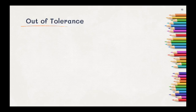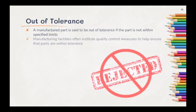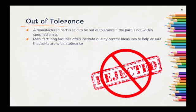So what happens when an object is out of tolerance? A manufactured part is said to be out of tolerance if the part is not within the specified limits. Manufacturing facilities often institute quality control measures to help ensure that parts are within tolerance. This means that if a part is outside of tolerance, it's rejected from the manufacturing process.